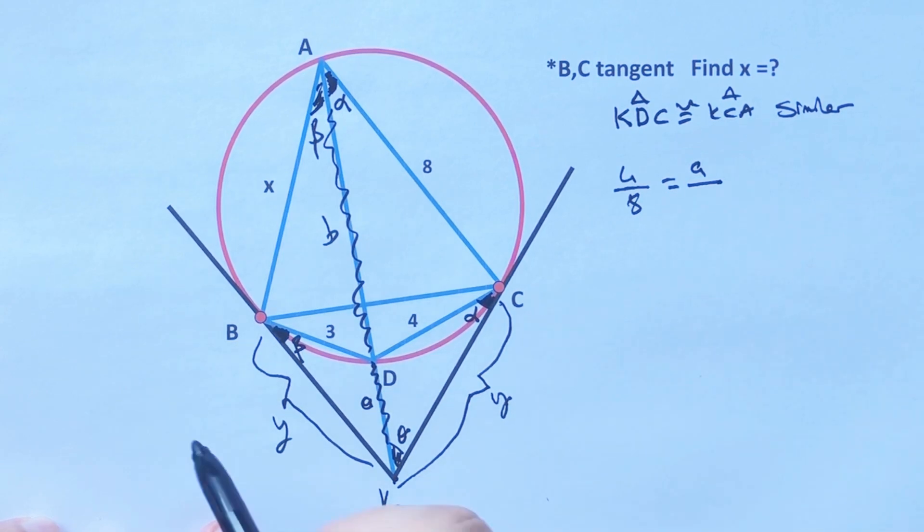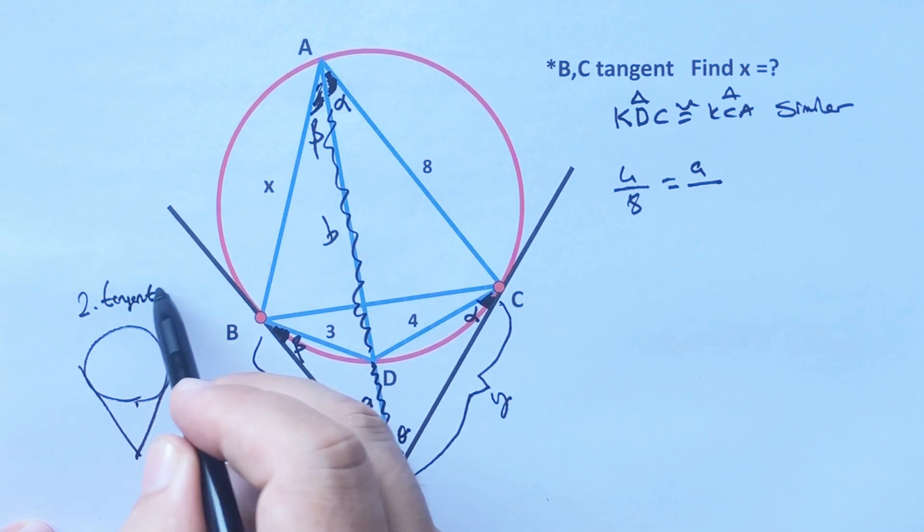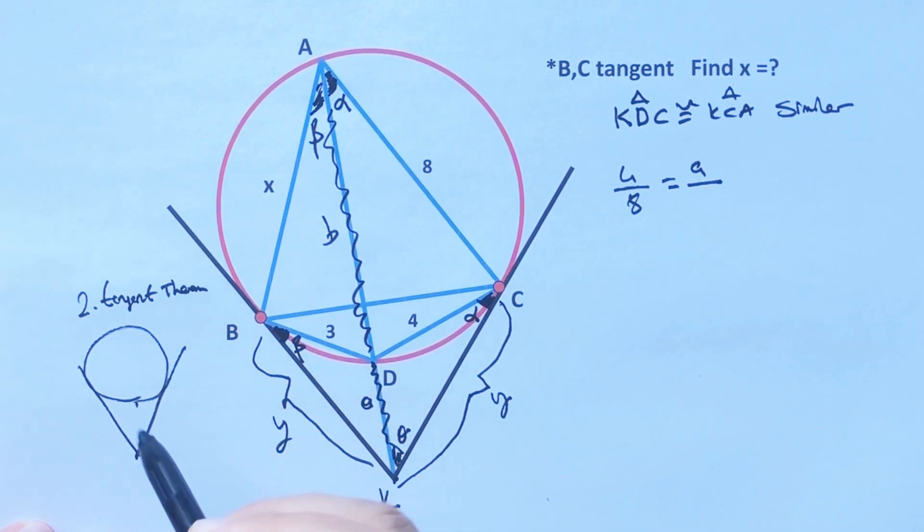Why? Because we know that according to two tangent theorem, these two lengths must be equal because of tangent. Okay, so...